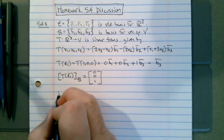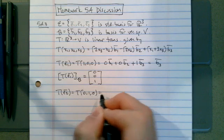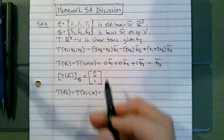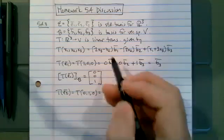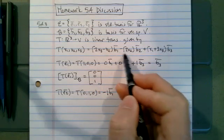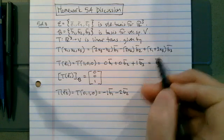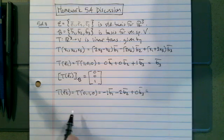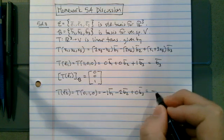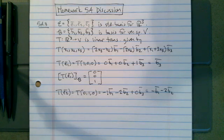So T(E2) will be the image of T of (0, 1, 0). Now x3 is 0 and x2 is 1, so for 2x3 minus x2 I get negative 1 times B1. Then minus 2x2 gives minus 2 times B2, and x1 plus x3 are both 0, so I get 0 times B3. The image of E2 under the transformation is minus B1 minus 2B2.